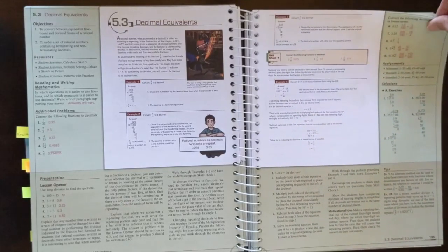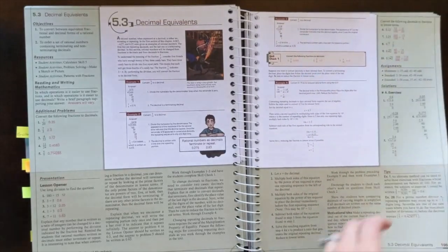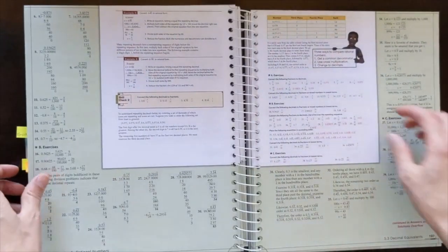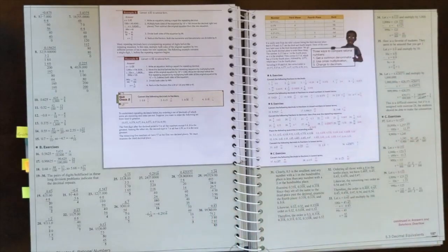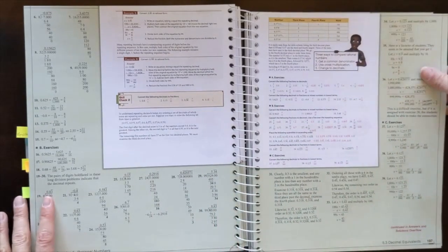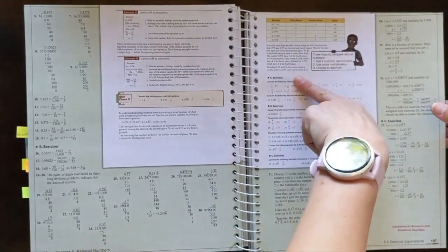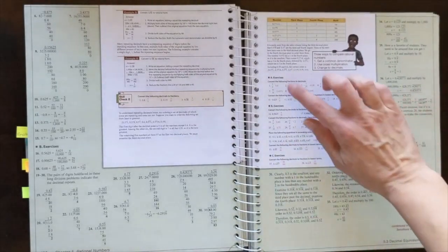Then you would go into that skill check. There's going to be that skill check one to make sure your child understands what they're doing. Then you're going to go into skill check two. You'll see there's all these fantastic solutions here for you.